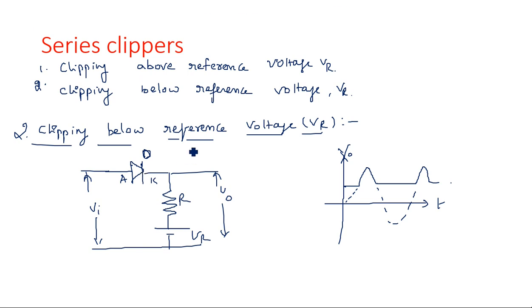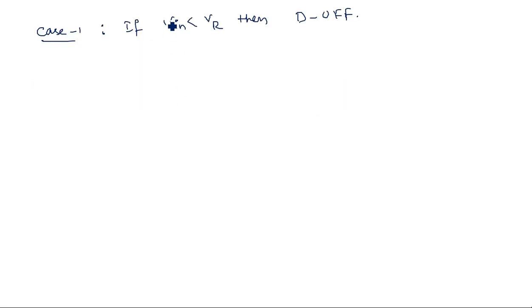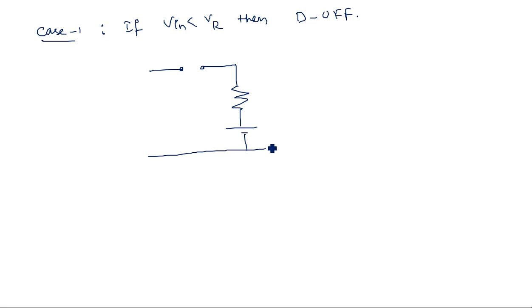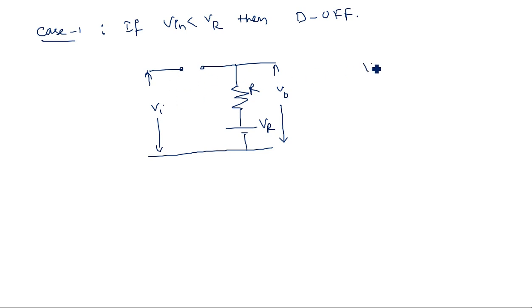When the diode is in off state, the circuit is simply open-circuited. We have a resistor R and reference voltage Vr, with output voltage V0. As there is no connection between input and output, the output is simply equal to Vr. This is the condition for Case 1.